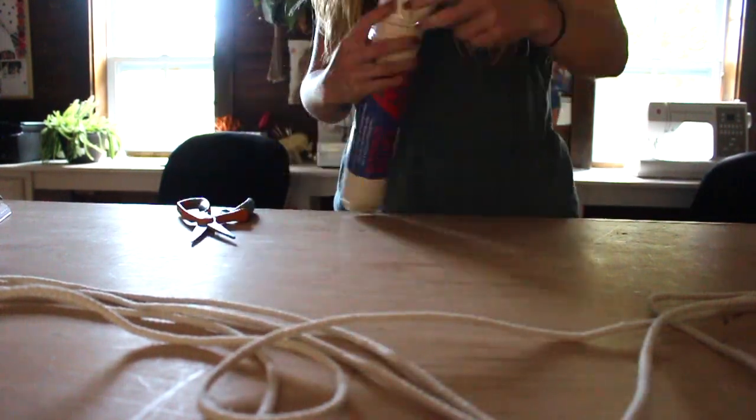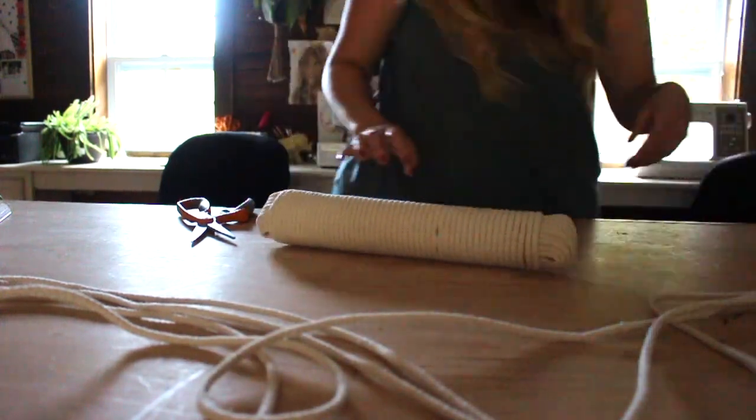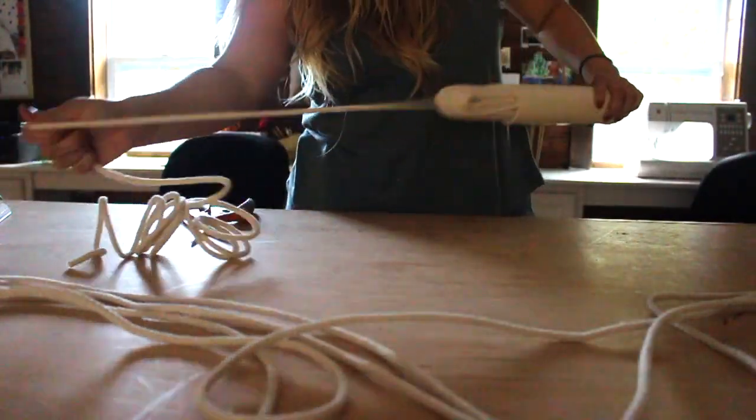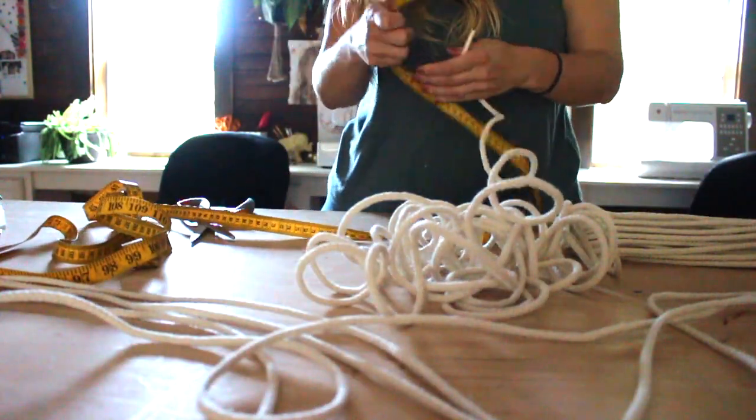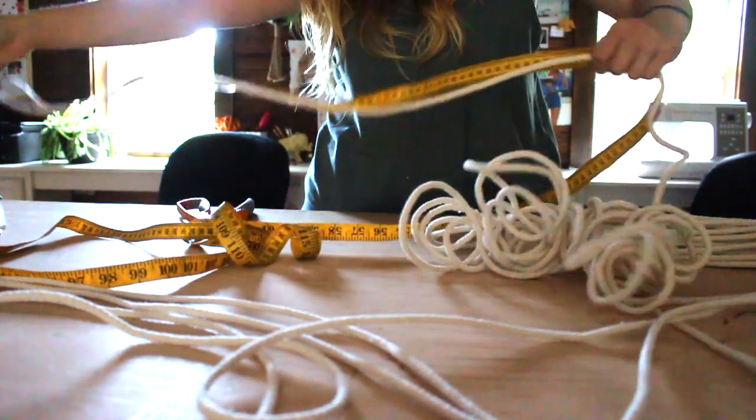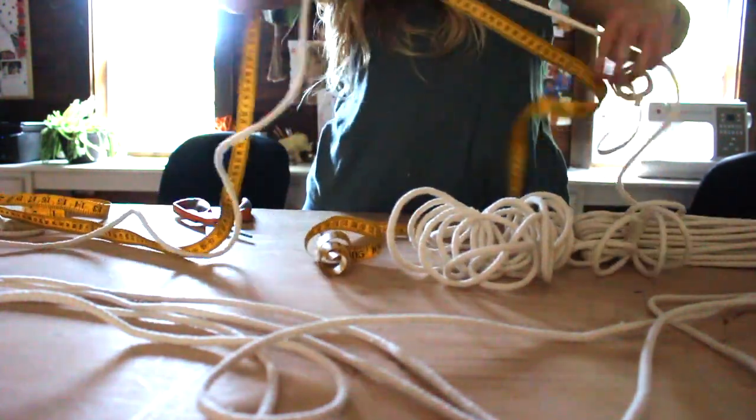Now it's time to measure your rope. I measured about 260 inches for 4 of the pieces and the other 2 I measured about 150 inches. That creates 6 pieces total, and 3 of them are for one side of your swing and 3 of them are for the other.